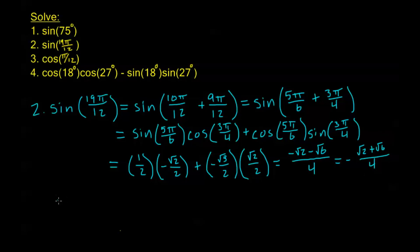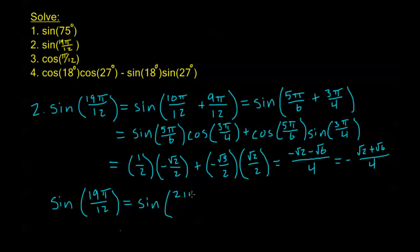We didn't have to use addition here. We could also have used our subtraction formula. For example, sine of 21π over 12 minus 2π over 12 — 21π over 12 reduces with a common factor of 3, and the difference is 2π over 12, which reduces to pi over 6. Then we could use our sine subtraction formula for that.